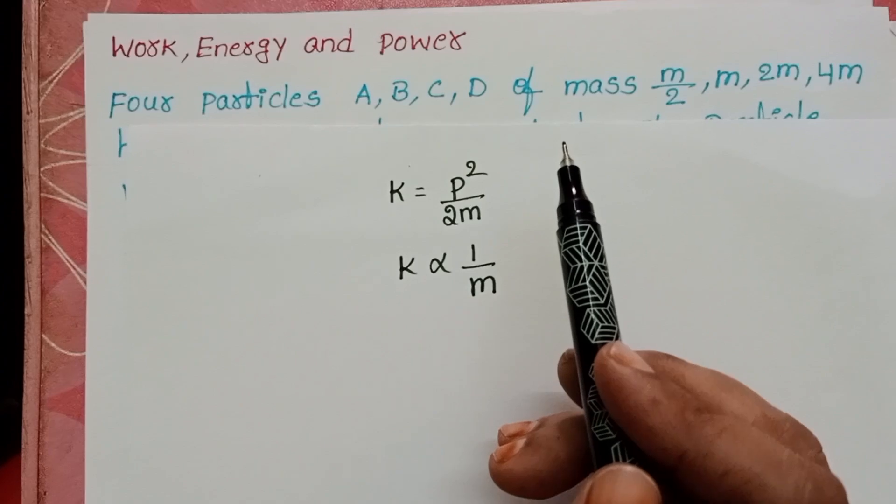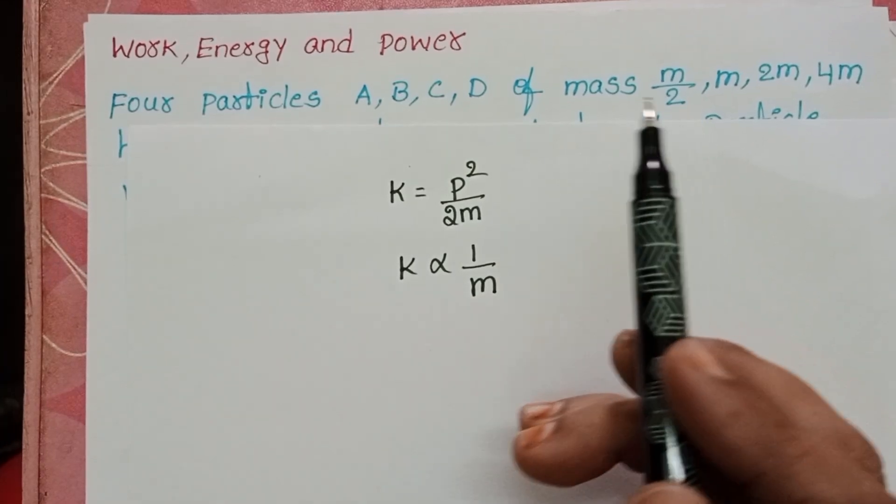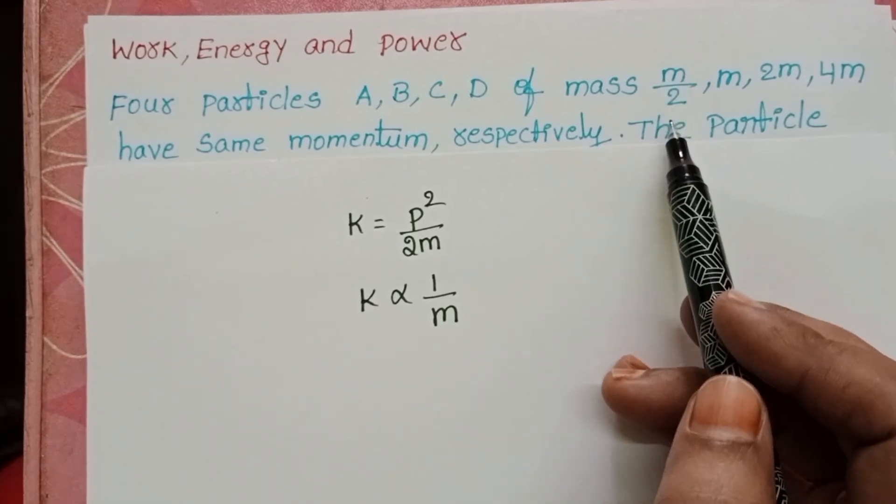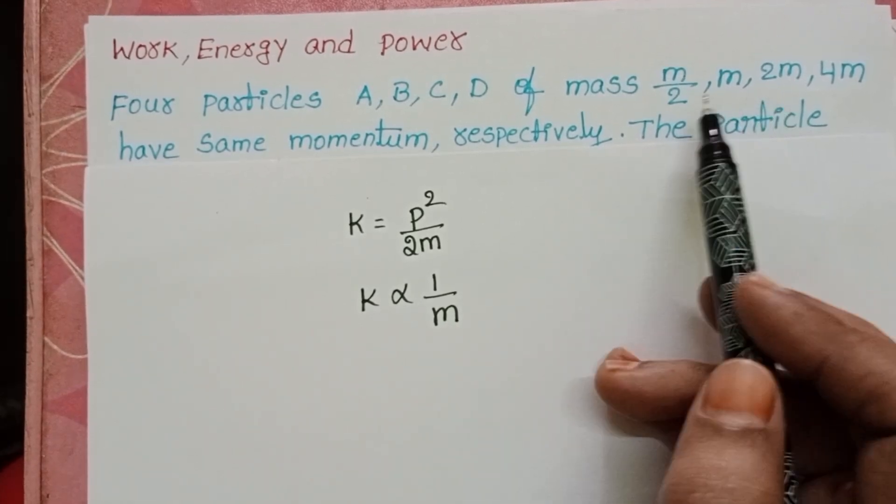So which particle has the less mass? That particle has maximum kinetic energy. Check the masses. First mass is M by 2. This is the least mass.